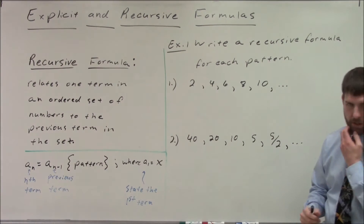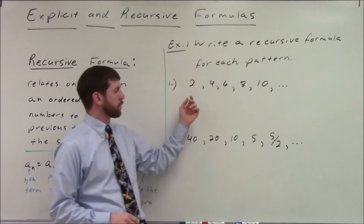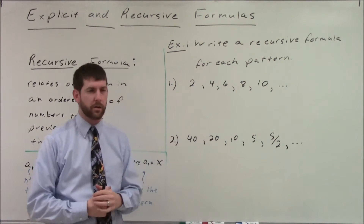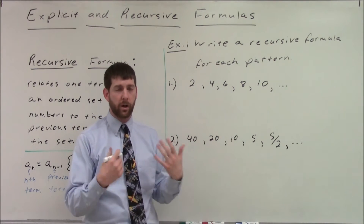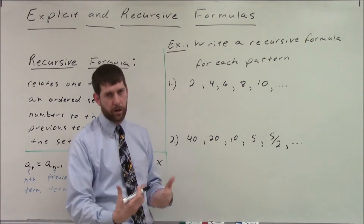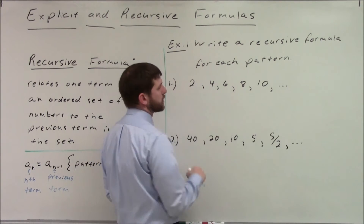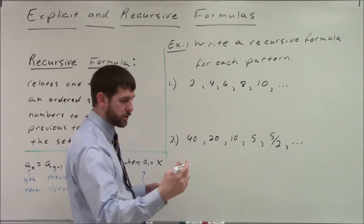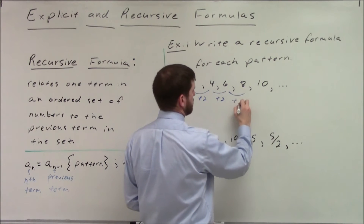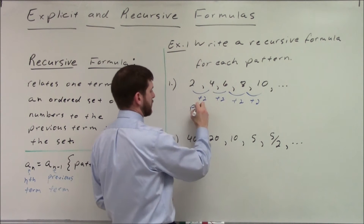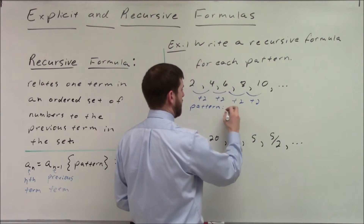So let's look at a couple of examples of recursive formulas. If we look at number one, we have 2, 4, 6, 8, 10 — a pretty standard sequence. We just want to describe the pattern: what mathematical operation is taking us from one term to the next? It should be obvious that we're just adding 2 to each term. They're the even numbers, so they're 2 units apart. So the pattern is add 2.